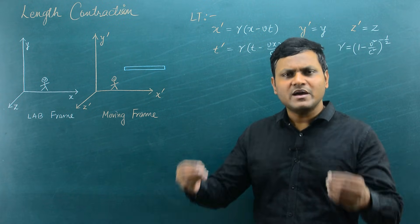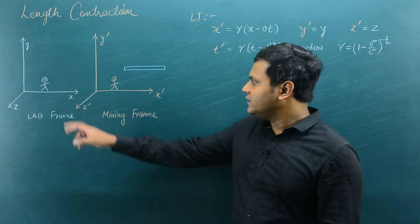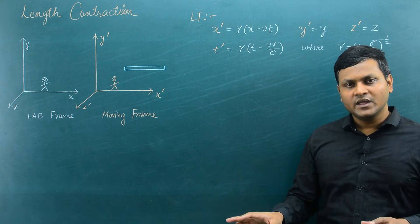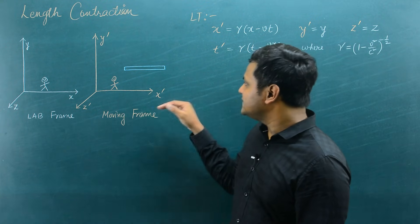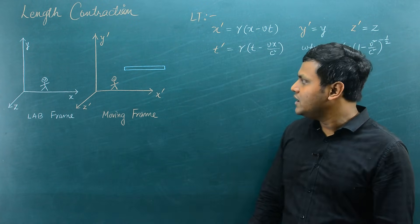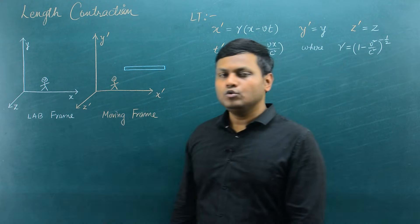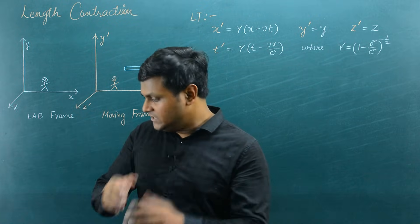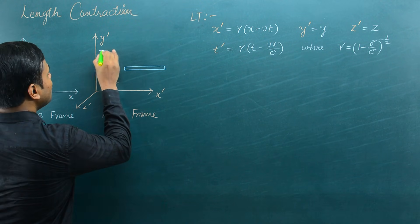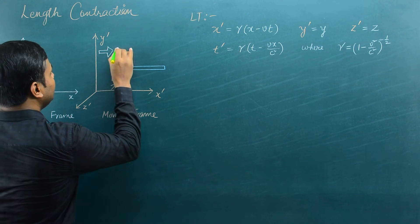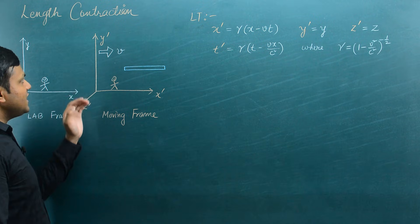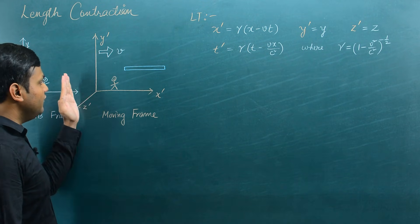These simply represent the Cartesian coordinate axes associated with these two observers — scientists or some kind of measuring device. For simplicity, we have taken x, y, z and x', y', z' coordinate axes for both observers respectively. We are assuming that x and x' are parallel, y and y' are parallel, z and z' are parallel during the course of relative motion. The origins of both coordinate reference frames coincide at time t = 0. The second frame is in relative motion at a constant velocity v with respect to the lab frame, moving along the x-axis.